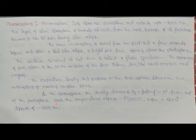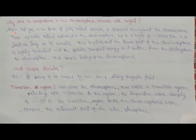Why does the temperature in the chromosphere increase with height? Hot gas in the form of jets called spicules is ejected toward the chromosphere. These spicules extend upward in the chromosphere up to a height of 10,000 kilometers and last as long as 15 minutes. This implies that the lower part of the chromosphere is highly turbulent, and these spicules transport energy and matter from the photosphere to the chromosphere, causing the heating of the chromosphere. This seems to be caused by the Sun's strong magnetic field.